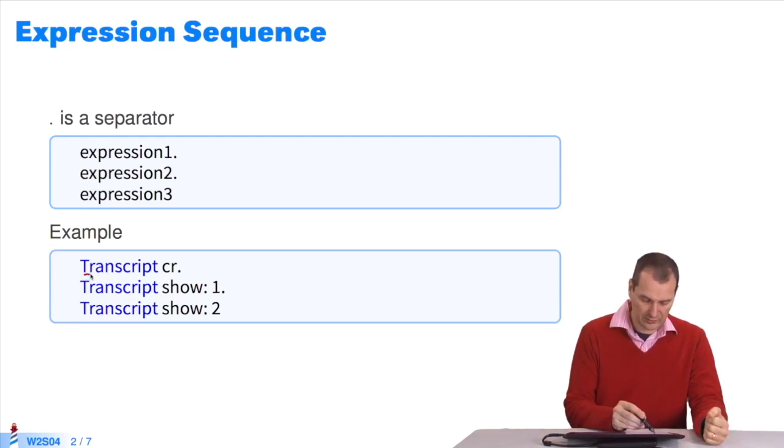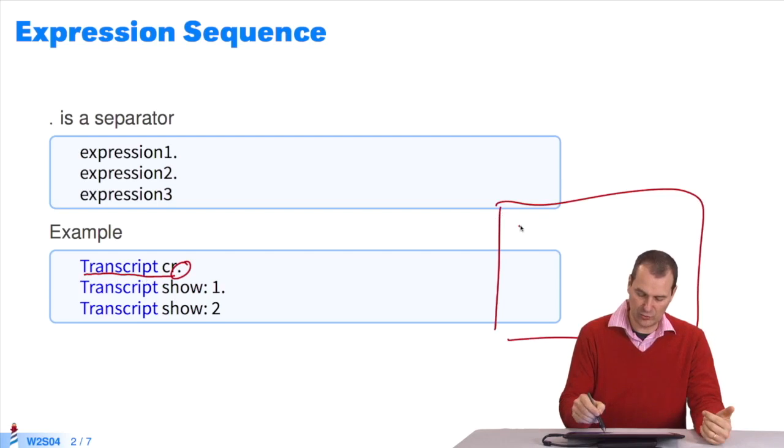Here you have transcript, CR, and a period. The transcript is a small tool for log messages. I want a new line. I want to show the object 1. I want to show 2. I could or couldn't have used a period. The expressions are separated by periods.